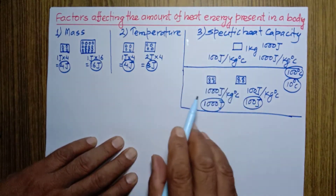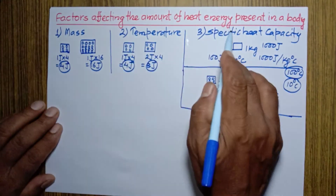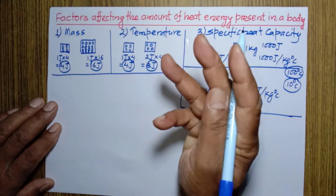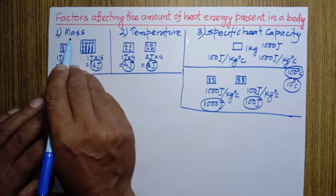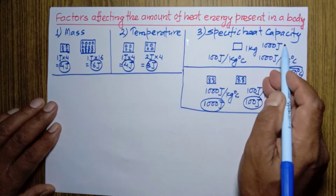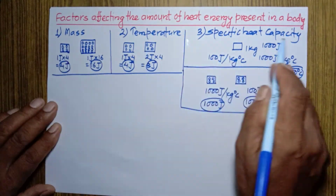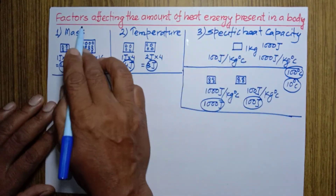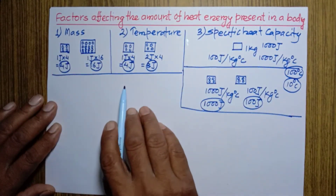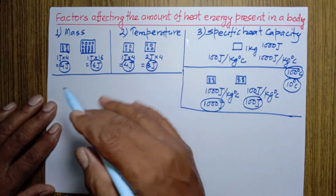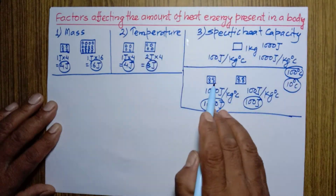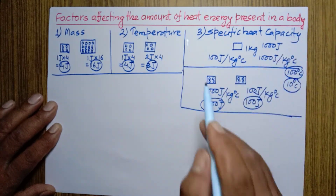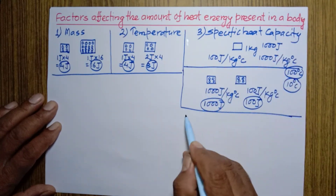So we can conclude that the amount of heat contained in a body depends upon three factors: mass, temperature, and specific heat capacity. All three factors affect the amount of heat positively — more the mass, more the heat energy; more the temperature, more the heat energy; more the specific heat capacity, more the heat energy contained in the body.